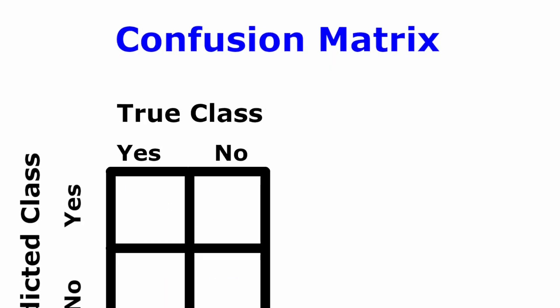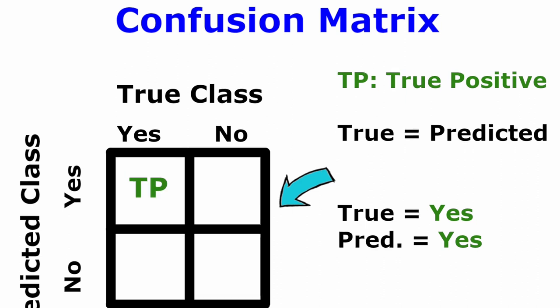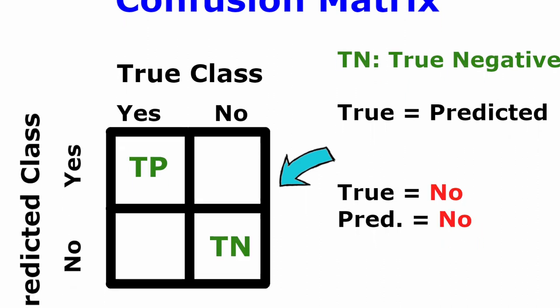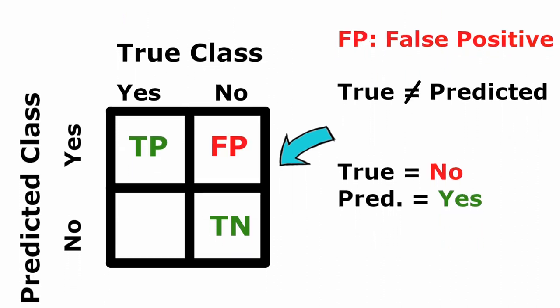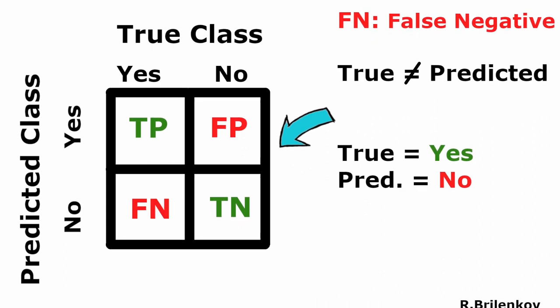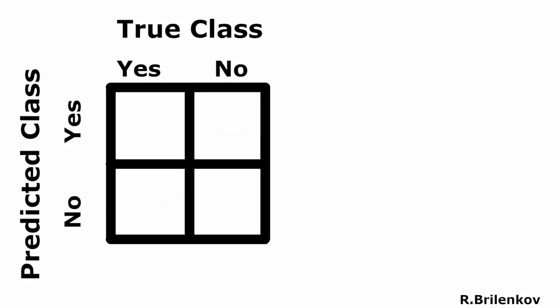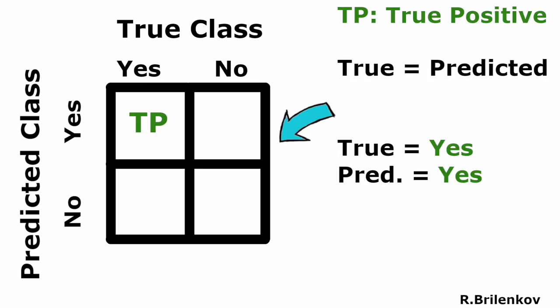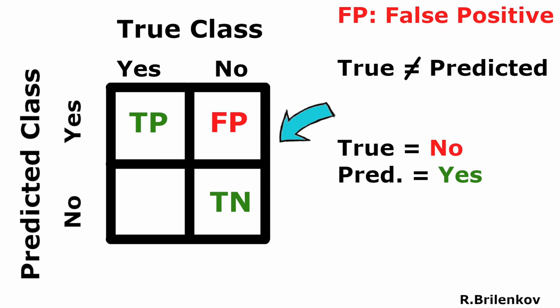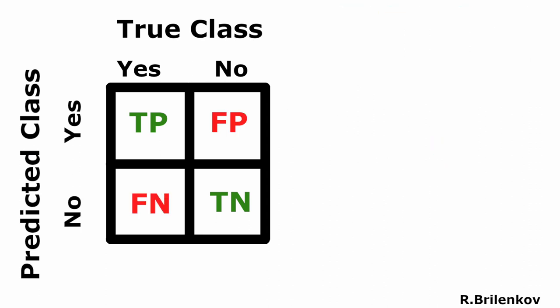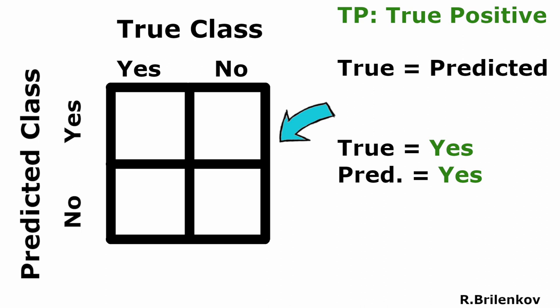Generally speaking, a confusion matrix is a table with rows and columns representing the instances of a predicted and actual class or vice versa. In this animation, you can see the elements of the confusion matrix. This matrix encompasses the information of the performance of our model and the type of errors being made.